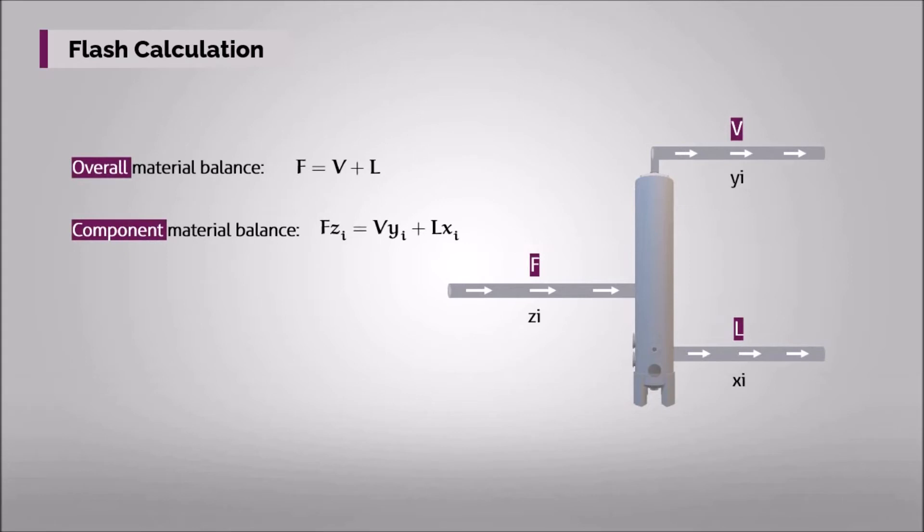Let's now learn how the flash calculation is carried out. Regarding the component material balance, if feed is assumed to be 1 mole for simplicity, the composition of each individual component can be calculated using the following formulas.